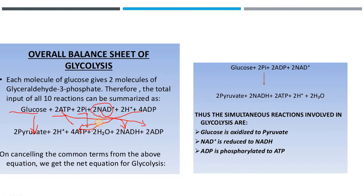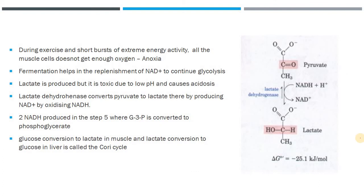Two H2O molecules are also produced as a result of the dehydration step. The net ATP produced is two (four minus two). In summary, as a result of glycolysis: glucose is oxidized, NAD+ is reduced, and ADP is phosphorylated to ATP. That is what happens under aerobic conditions.